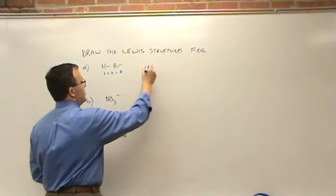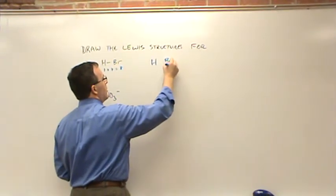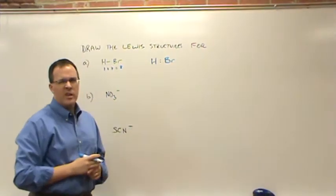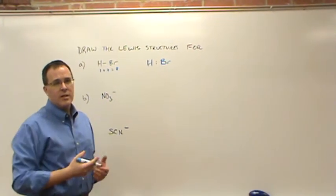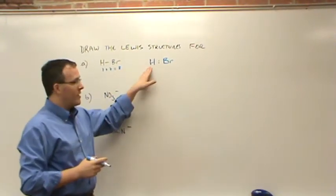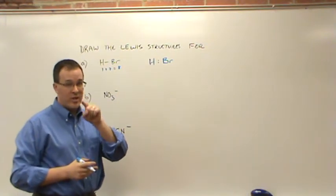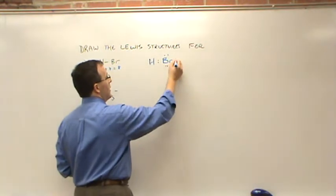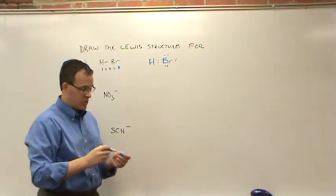So we're going to draw our H and we're going to draw our Br, and we're going to just allocate those eight electrons. We're going to put two in here to make the bond, and then we're going to put the other six in the place where they need to go, which is not on the hydrogen. Remember, hydrogen only gets two electrons. So that's two, four, six, eight. Done. Lewis structure now complete.